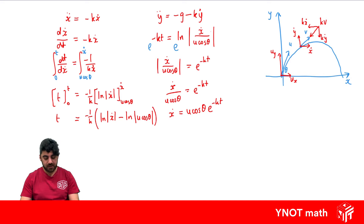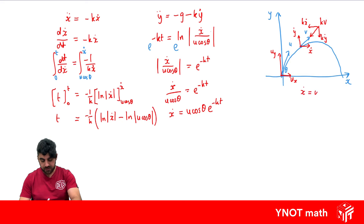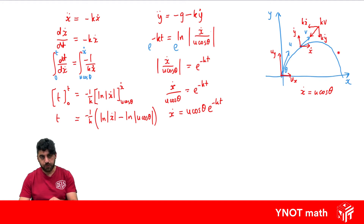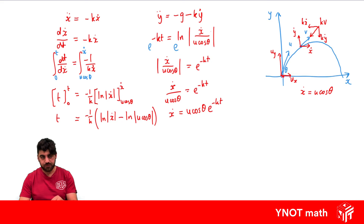This is our expression for velocity in the x direction. With no resistance, x-dot was simply u cos theta — constant, never changing. Now we multiply by e to the minus kt, where k is the proportionality constant. Since this is exponential with a negative exponent, the longer the motion goes on, the faster the velocity decays. So the beginning of the motion starts like a parabola but decays quickly as time goes on.